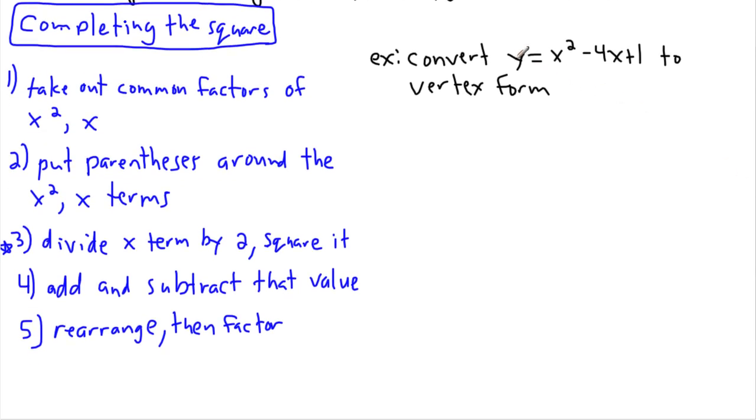So this is the goal. We've got something given in general form. So y equals x squared minus 4x plus 1. So a is 1, b is negative 4, and c is 1. So how do I convert to vertex form? Well step one will be to just follow my own steps here.